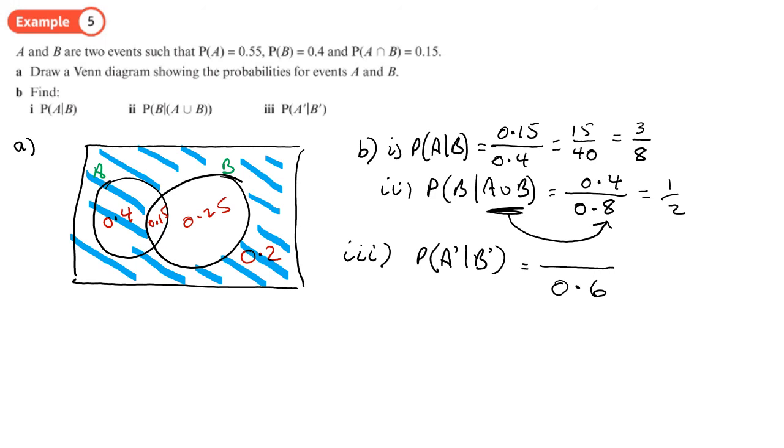Well, it's just this. This is the only thing that I've shaded that's not in A. 0.2, so 0.2 over 0.6, which is 2 over 6, which is a third.